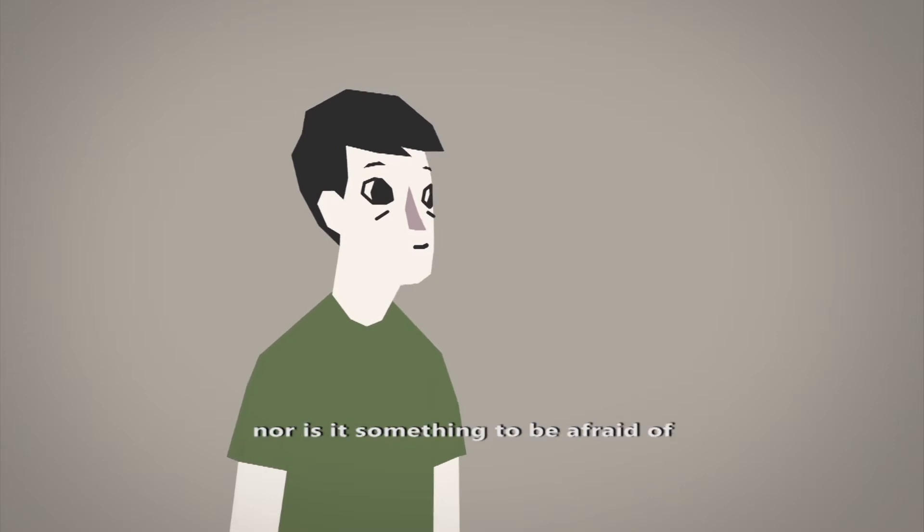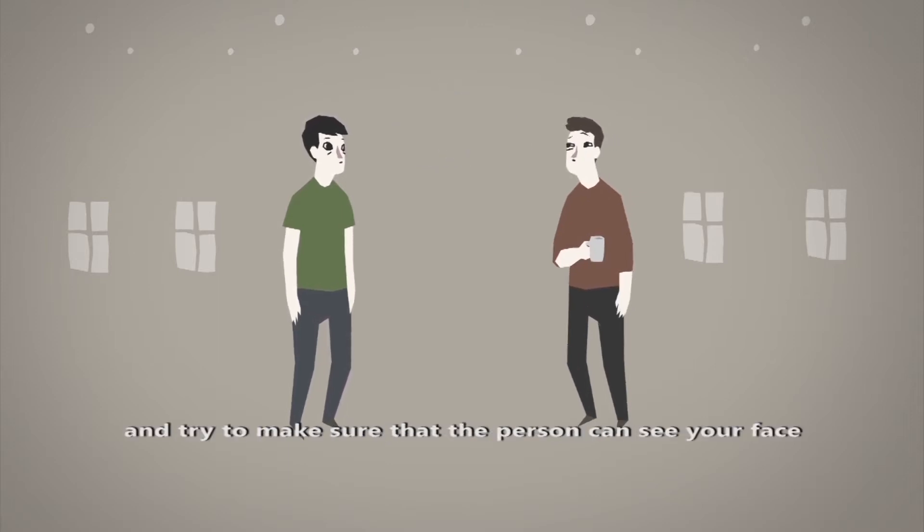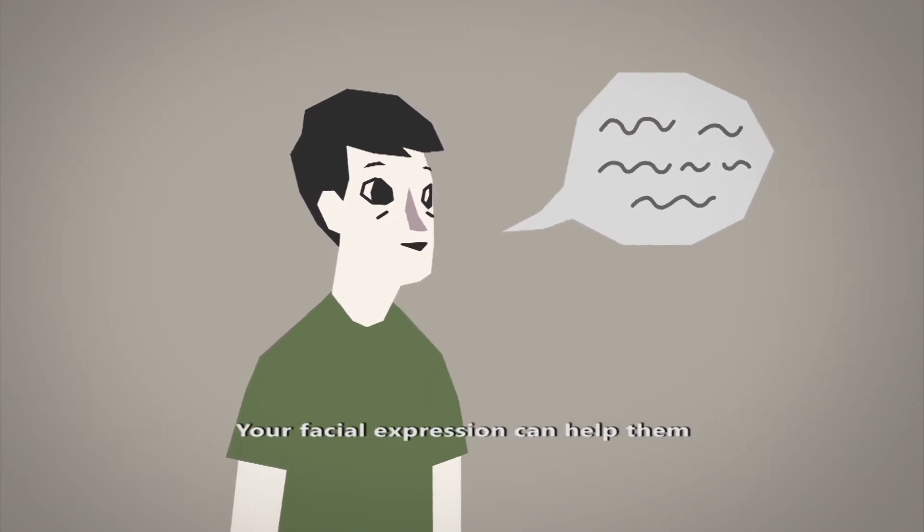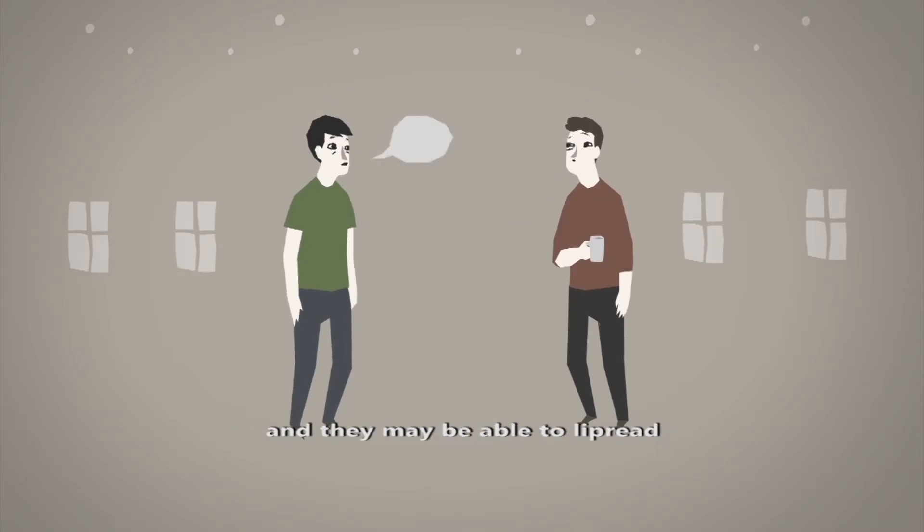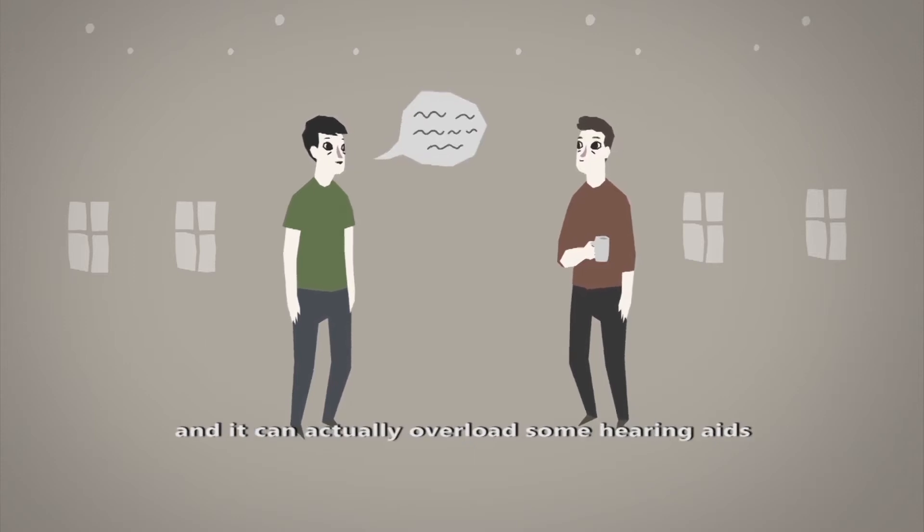Hearing loss is not a secret, nor is it something to be afraid of. So be open with the person. Don't whisper, speak clearly and try to make sure that the person can see your face. Your facial expression can help them to understand what you're saying and they may be able to lip read. Don't shout. Shouting doesn't usually help and it can actually overload some hearing aids.